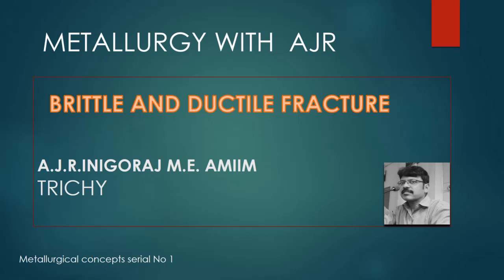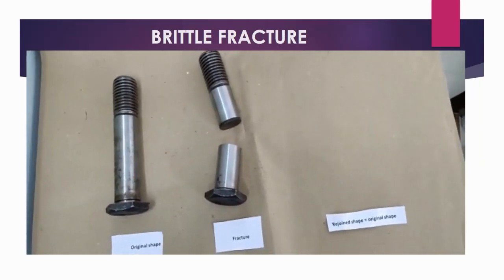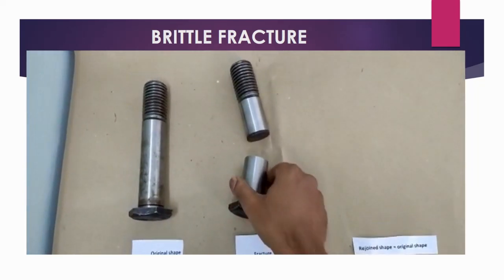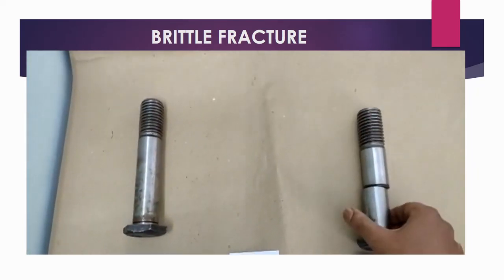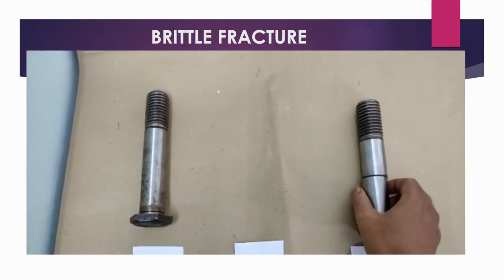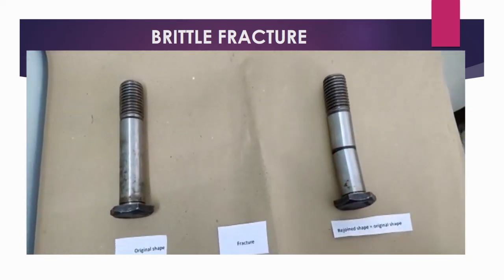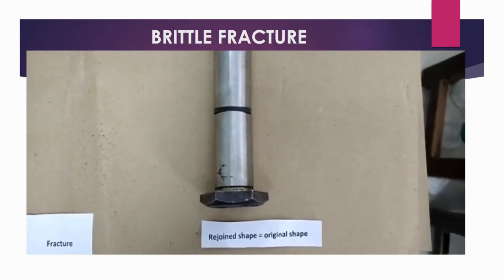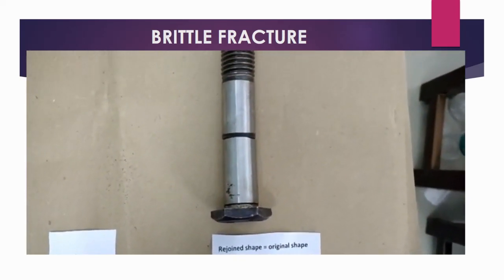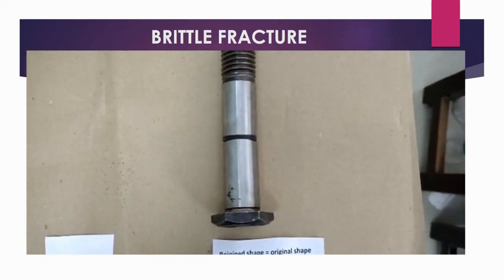Brittle fracture permits no plastic deformation prior to the fracture. The sample for our explanation is a bolt — it fractures into two halves. When the bolt is placed so that the fracture surface is rejoined together, you can see that there is no plastic deformation along the bolt.